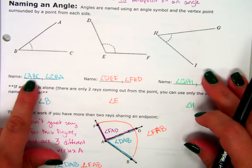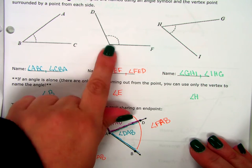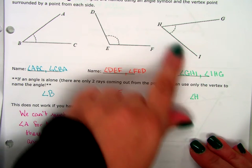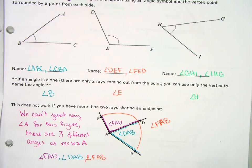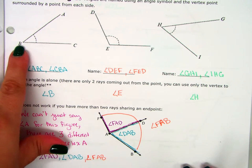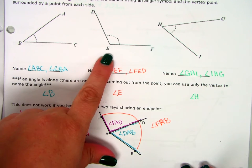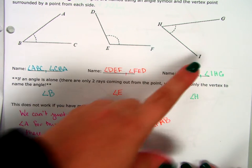When you name an angle, the vertex has to be in the middle. So my B here has to be in the middle, my E has to be in the middle, my H has to be in the middle, and then the other two letters go around it. If you just have two rays in your figure, you can use just the vertex to name it. So I could call this just angle B, angle E, angle H.